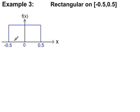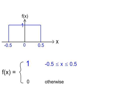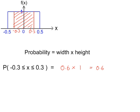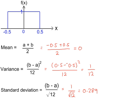Example 3: rectangular probability distribution on minus 0.5 to 0.5. The width along here is equal to 1, so the height is 1 divided by 1, which is also 1. So f of x equals 1 when x is between minus 0.5 and 0.5. Outside that range, f of x is 0. Working out a simple probability: width of 0.6 times height of 1. Then we can work out the mean, variance, and standard deviation using the formulae.